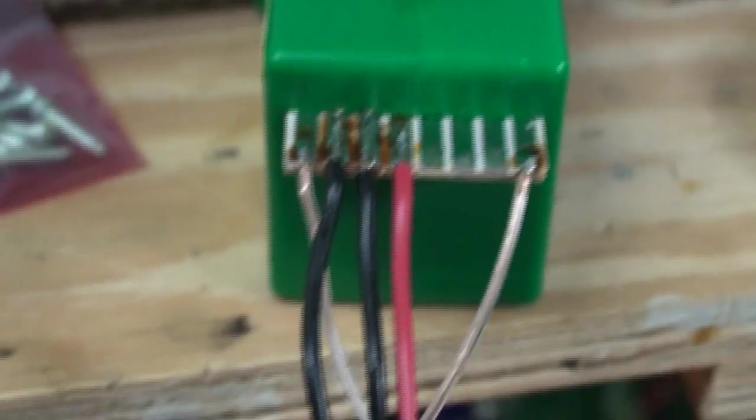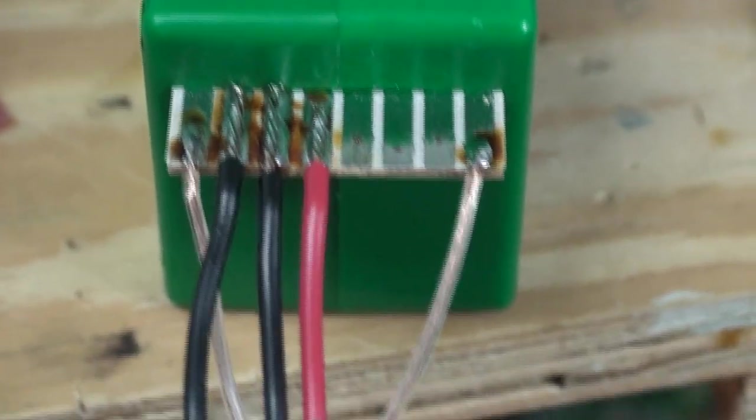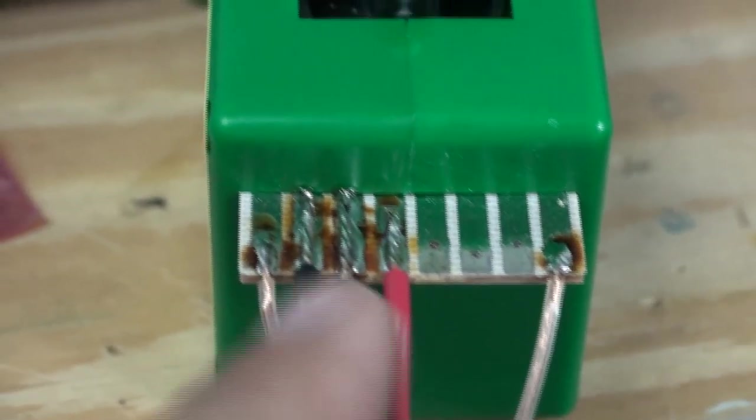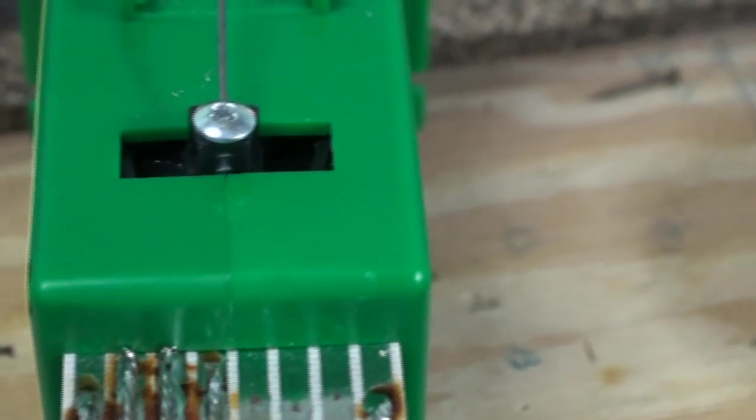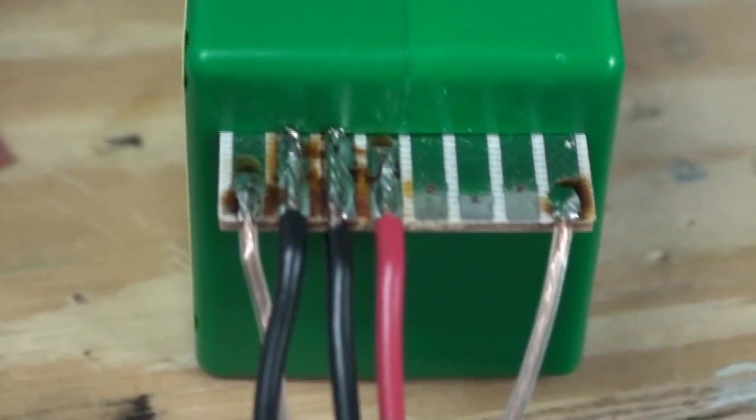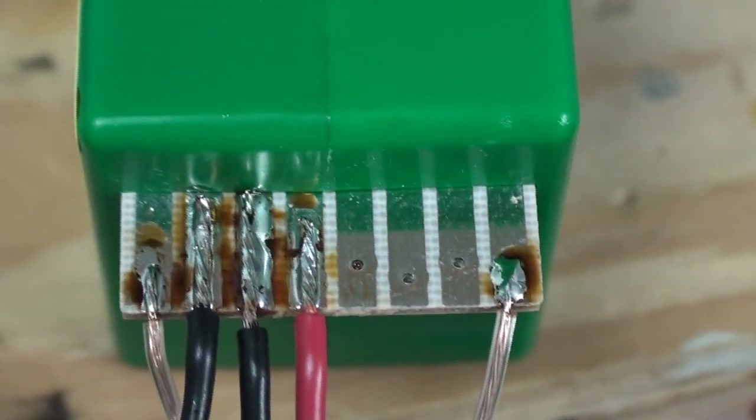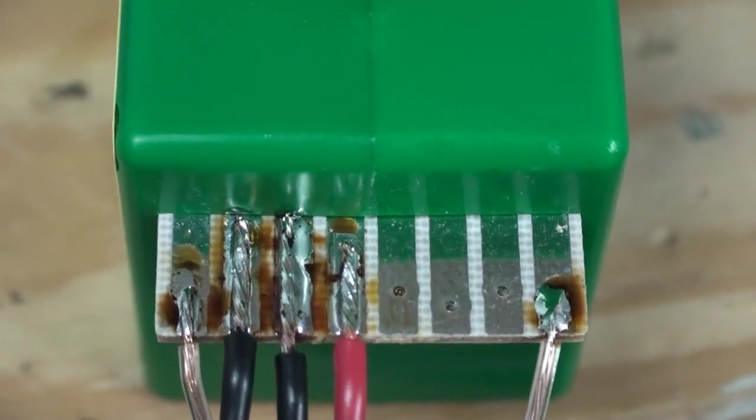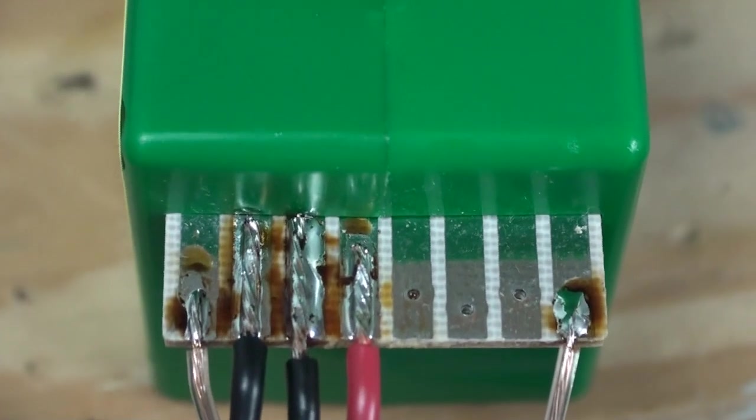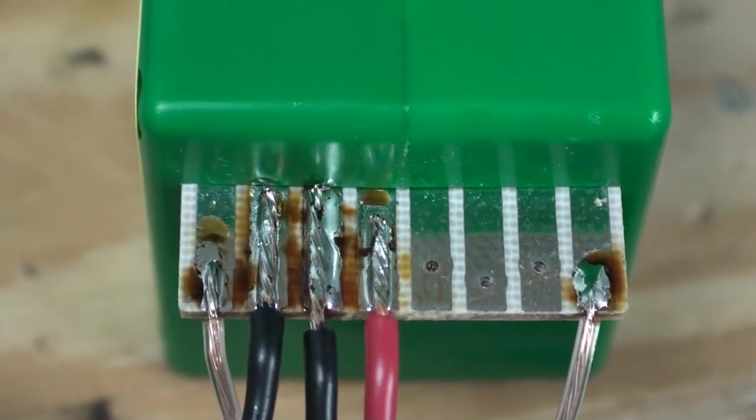The other three wires, the black and the two blacks and the red, the red goes to the frog and the two blacks, one goes to each outside rail. And the flux that's on there, I will clean that off with a little brush and toothbrush and some denatured alcohol to make sure that no corrosion will set in in the future and make sure I have a clean joint.